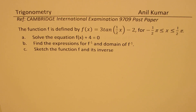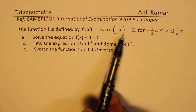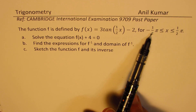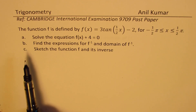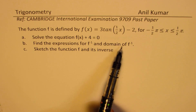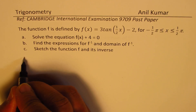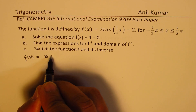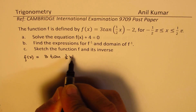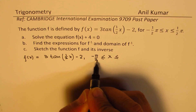Here is a very interesting question which had been there a couple of years back. The function f is defined by f(x) = 3 tan(x/2) - 2, for x greater than or equal to minus pi by 2 and x less than or equal to pi by 2. The three parts of this question are: solve the equation f(x) + 4 = 0; find the expression for f inverse and the domain of f inverse; and sketch the function f and its inverse.